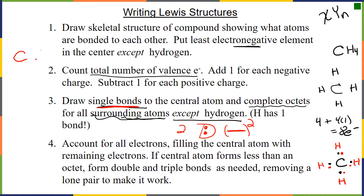We draw single bonds as a single line, representing 2 electrons. Starting with carbon and 4 hydrogens, we put our bonds in and count: 2, 4, 6, 8 — that is our Lewis structure of methane. We must account for all electrons and make sure we've followed the octet rule. If an element has too few electrons, we'll need a double or triple bond. If it has too many, we may have a hypervalent or expanded octet.